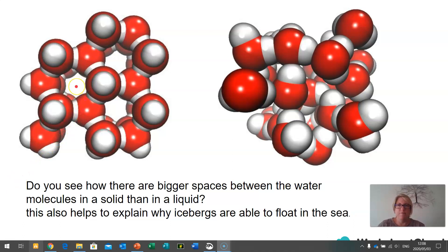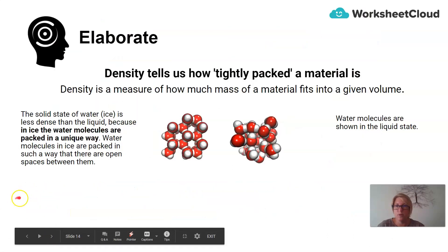These are two molecules of water. The molecule on the left is what the water molecules look like in a solid. The diagram on the right is what the water molecules look like in a liquid. Do you see how there are bigger spaces between the water molecules in a liquid than in a solid? So here we have much bigger spaces between the particles than here. This also helps to explain why icebergs are able to float in the sea or why ice floats in water.